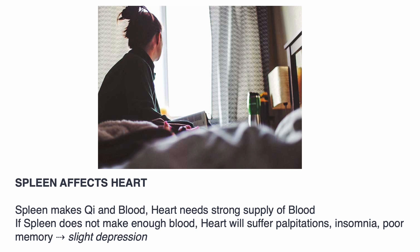The spleen affects the heart: the spleen makes chi and blood, and the heart needs a strong supply of blood. If the spleen does not make enough blood, the heart will suffer — palpitations, insomnia, poor memory, and slight depression ensue.